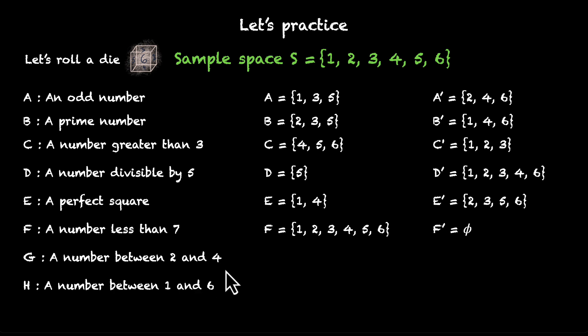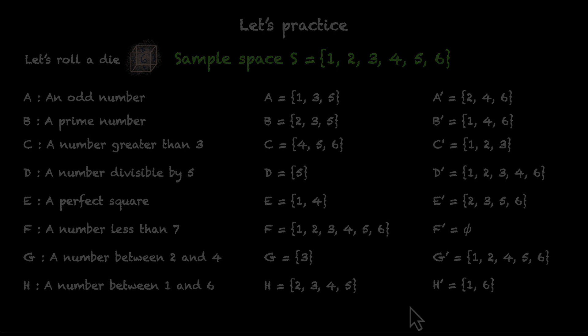A number between 2 and 4. Again, between does not mean you have to include 2 and 4. Between means a number between 2 and 4. That's only 3. Its complement will have the remaining numbers: 1, 2, 4, 5, and 6. A number between 1 and 6. There are these numbers: 2, 3, 4, and 5. They're all between 1 and 6. And its complement will have 1 and 6. So, there we have it. We now know what complement means, how do we write it in math, and we've solved a few examples.